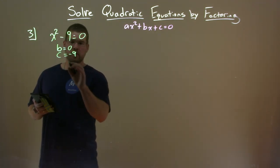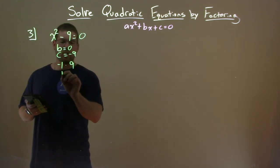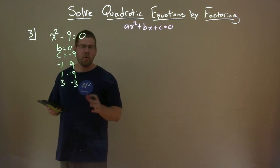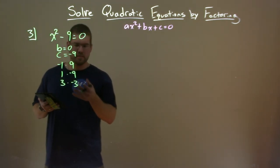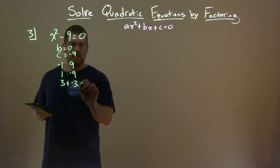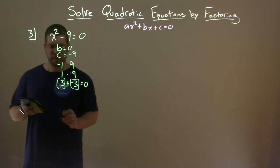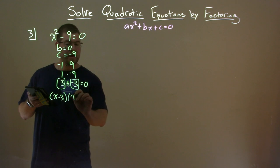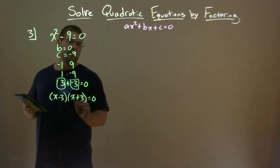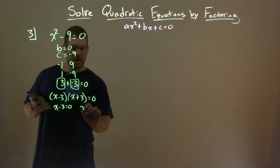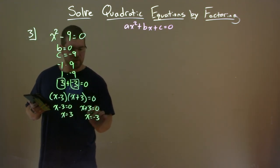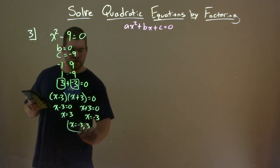Two numbers that multiply to be negative 9: negative 1 and positive 9, or 1 and negative 9, and 3 and negative 3. Which one adds to be zero? That's 3 and negative 3. So our two numbers are positive 3 and negative 3. We have x minus 3 times x plus 3 equals zero. Setting both parts equal to zero: x equals positive 3 and x equals negative 3. Our two answers are negative 3 and positive 3.